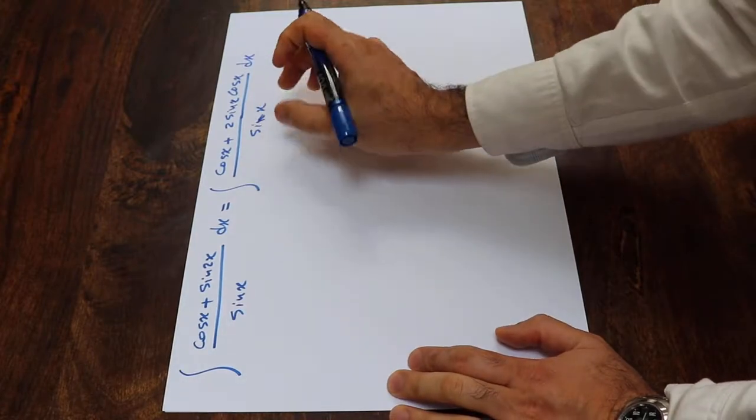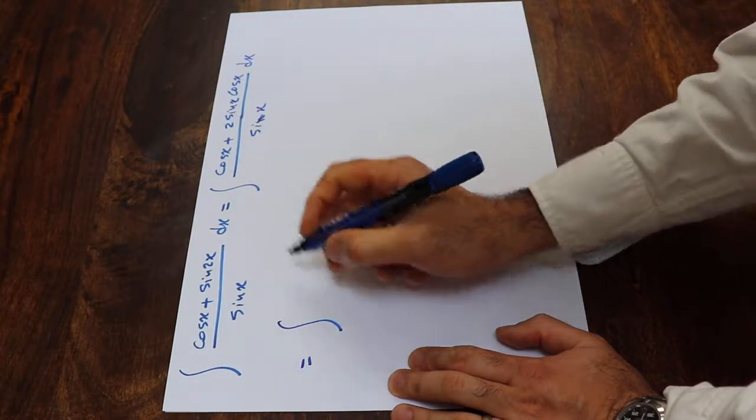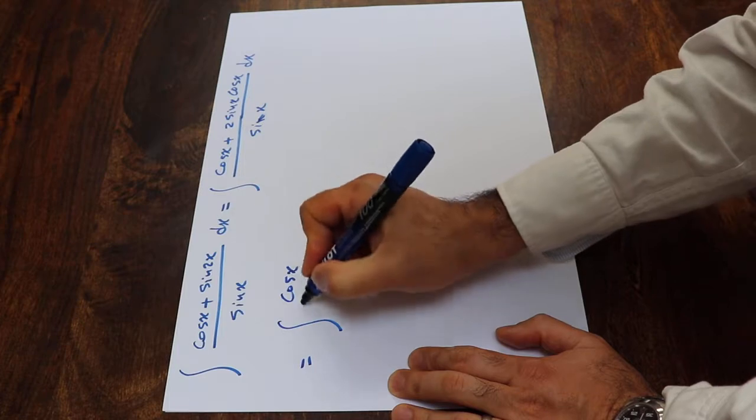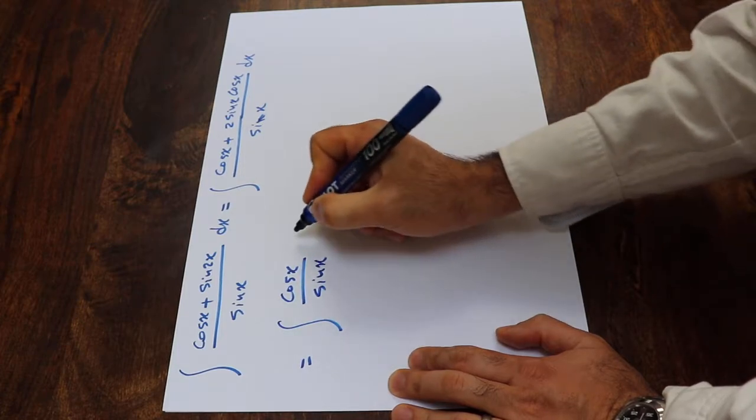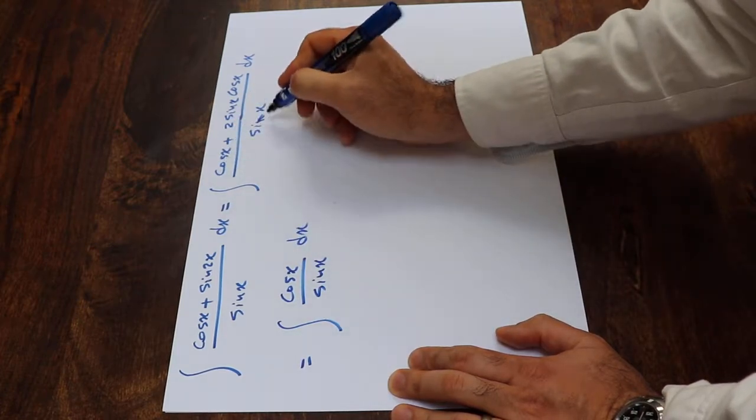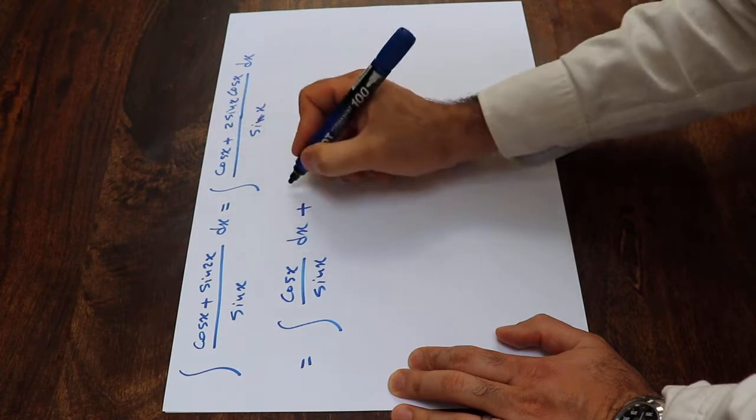Now you can split this integral into 2 integrals. That will be equal to integral of cosine x divided by sine x dx, that is cosine x divided by sine x plus, 2 is constant.